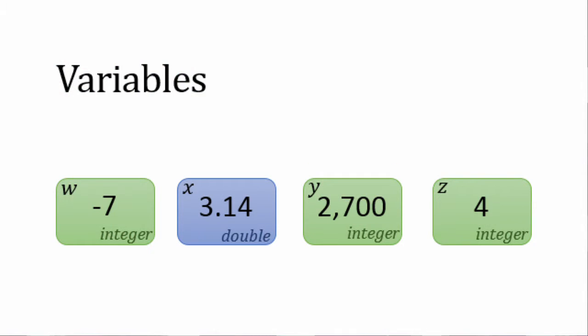Hey Supercoders! Today we're going to learn about variables. Variables in programming are a lot like those in math. They can have names like x or y, and they also have values like negative 7 or 3.14.